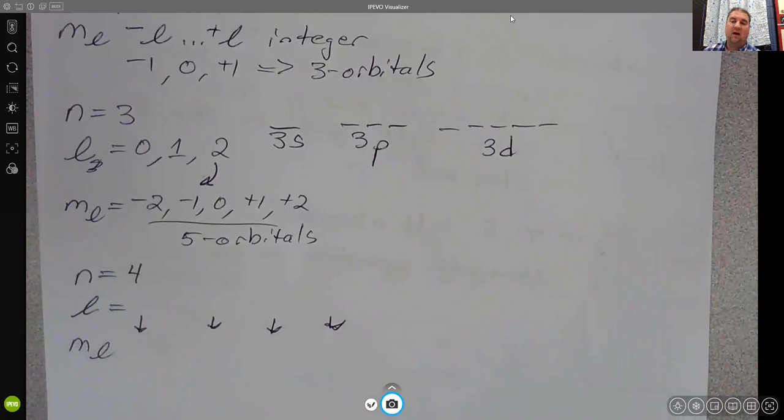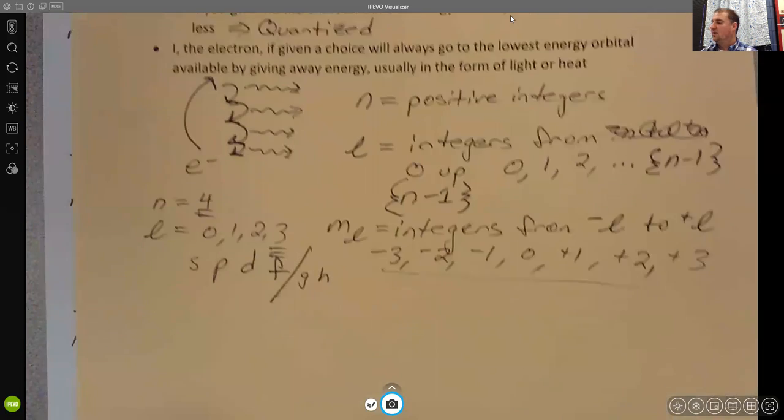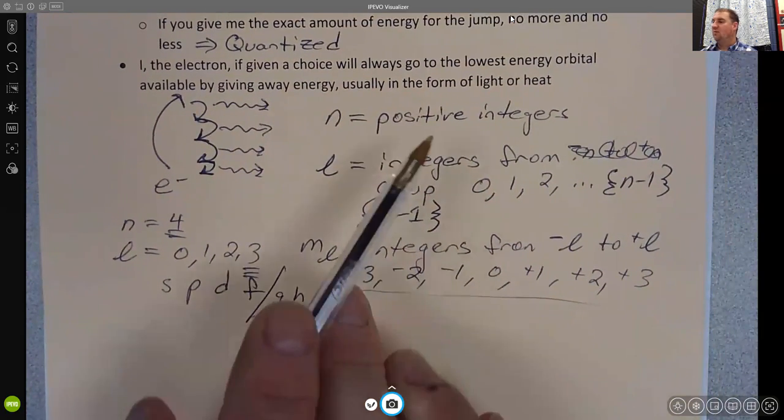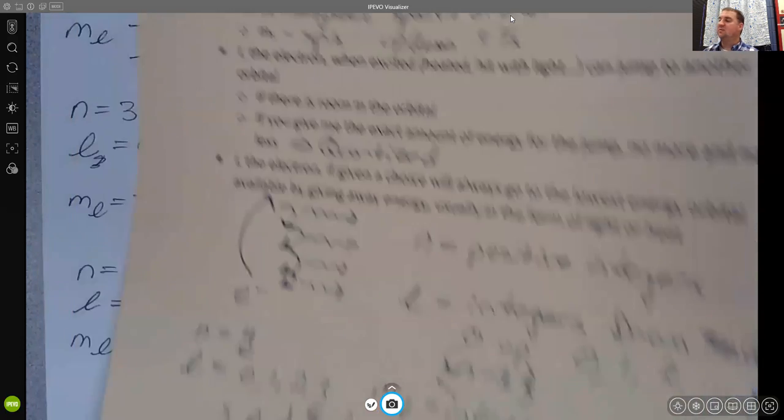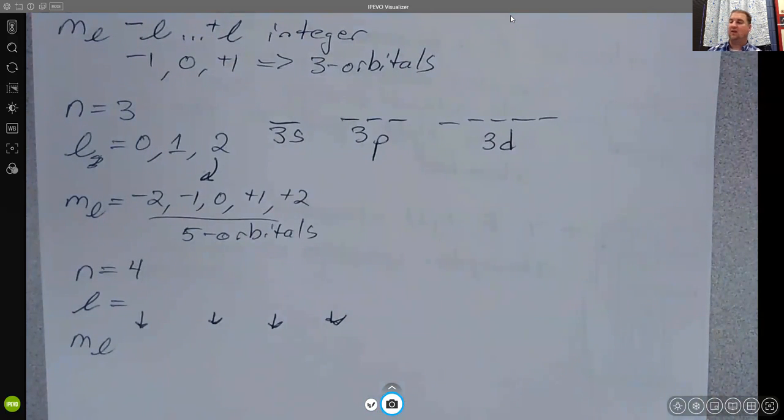And we'll talk about a little bit more about the energies of these levels, and specifically how those energies vary a little bit and start to overlap. And how we actually have to fill these in so that the electrons—remember, if I, the electron, have a choice, I will always go to the lowest energy orbital available. And we'll talk about that in class and we'll talk about the energies of these.